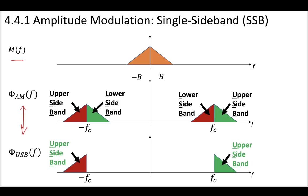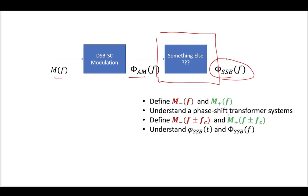So once we've modulated it and we've used a phase shift transformer, we're going to be able to define our phase shifted M minus and M plus. And that's going to give us an understanding of the single sideband in time domain and in frequency domain when we use the phase shift transformer system.